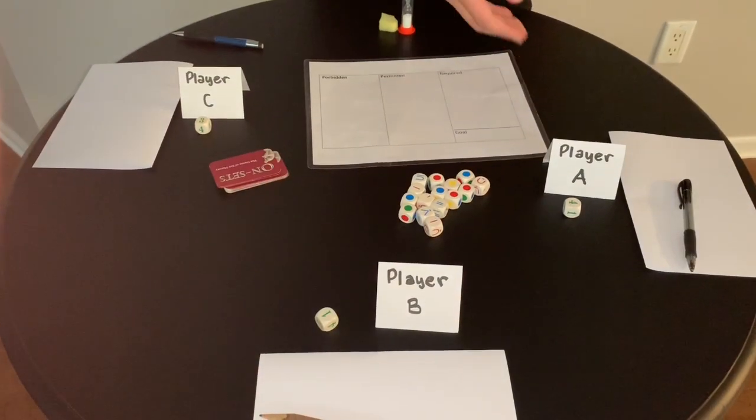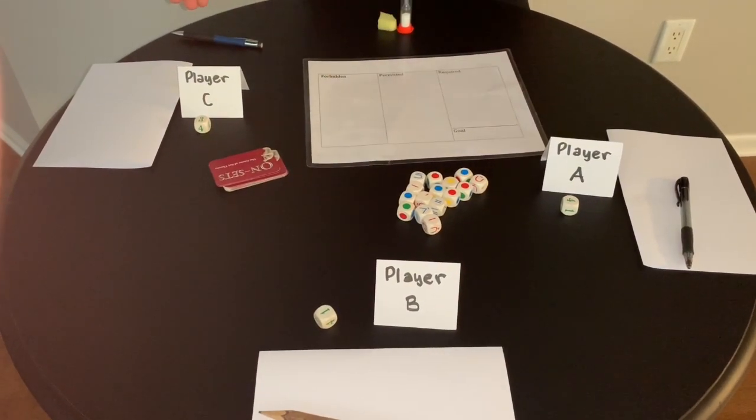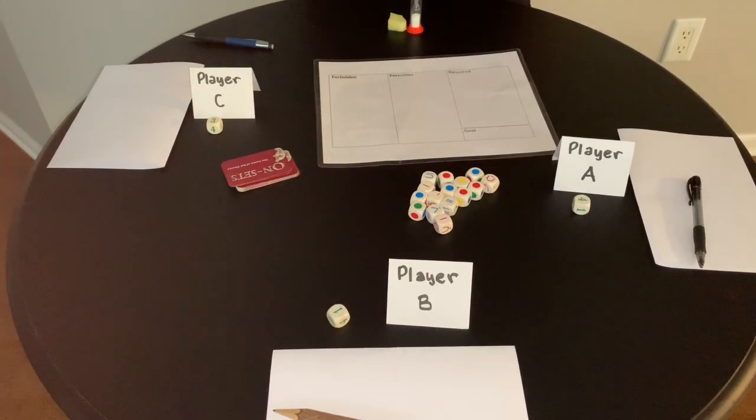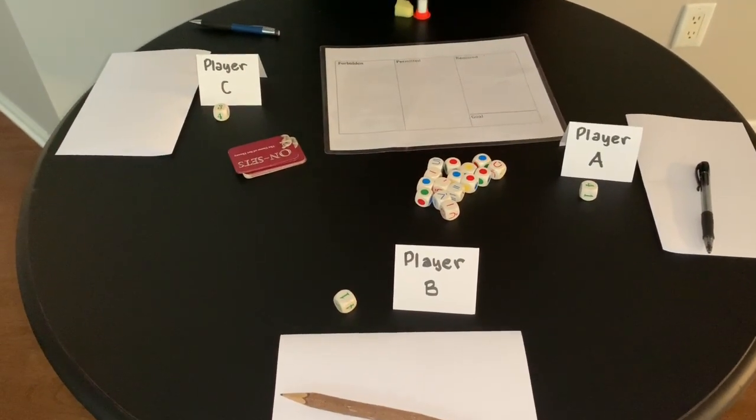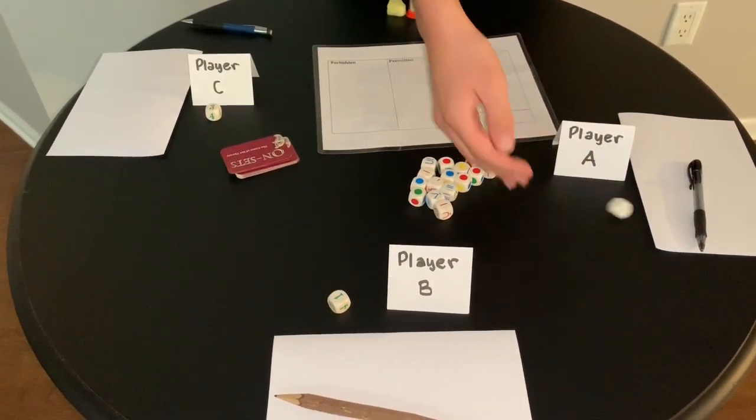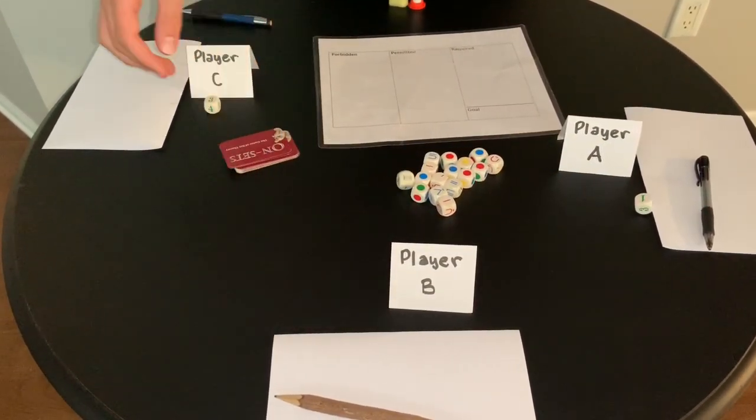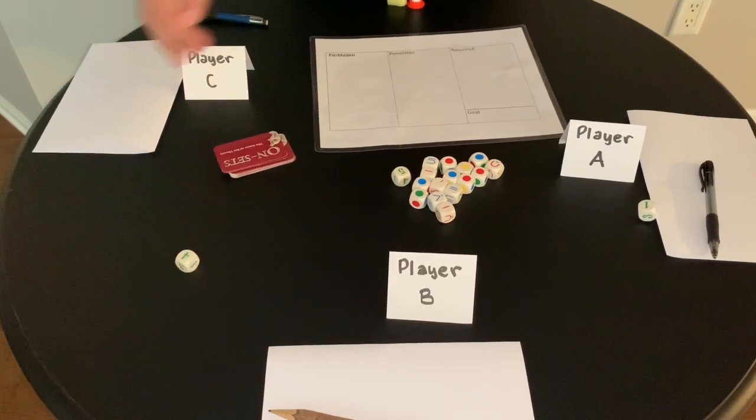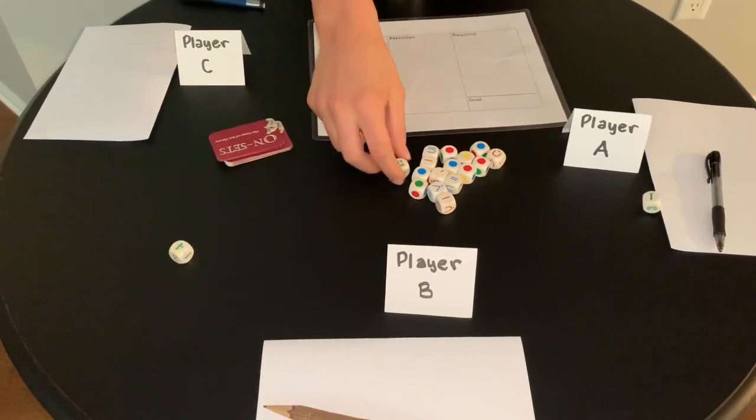In this demonstration, we have three players: Player A, Player B, and Player Z. Throughout the demonstration, I'm going to model as all of them and switch between each one. In the beginning, each one rolls the dice to determine who's the first goal setter. It's going to be Player B since they rolled five.